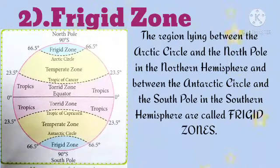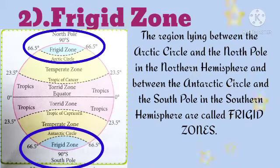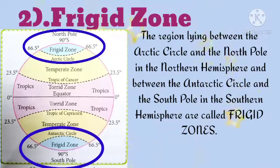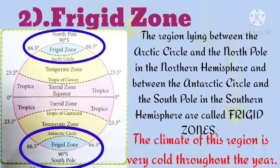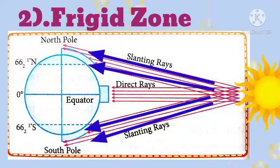The region lying between the Arctic Circle and the North Pole in the Northern Hemisphere, and between the Antarctic Circle and the South Pole in the Southern Hemisphere, is called the Frigid Zone. The climate of this region is very cold throughout the year. Please remember, this region receives slanting rays of the sun, hence it is very cold throughout the year.